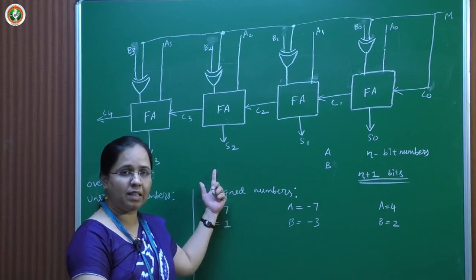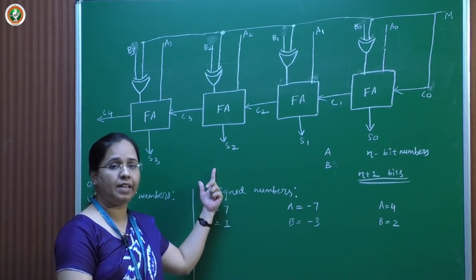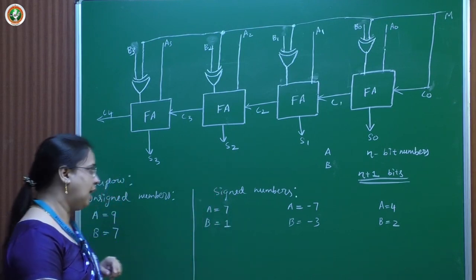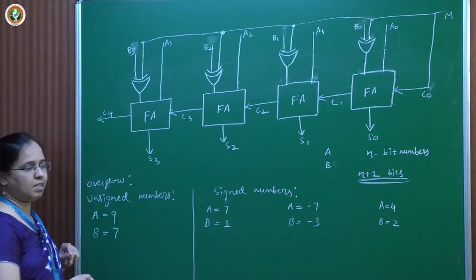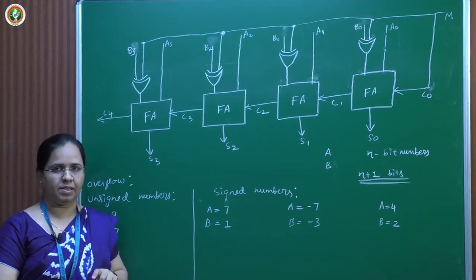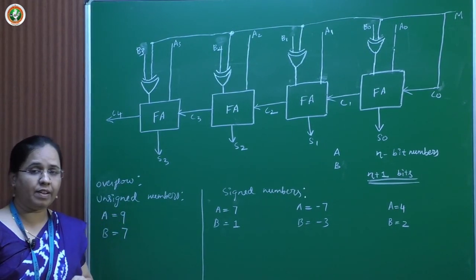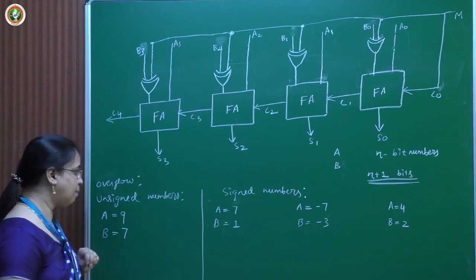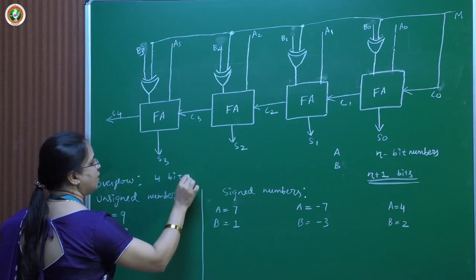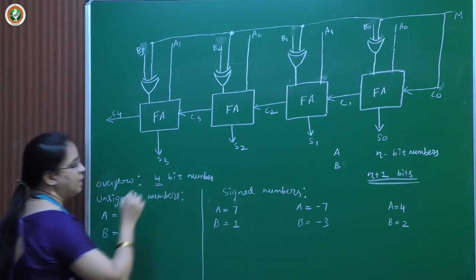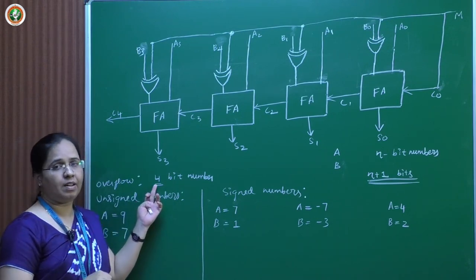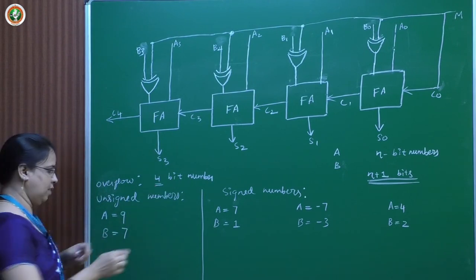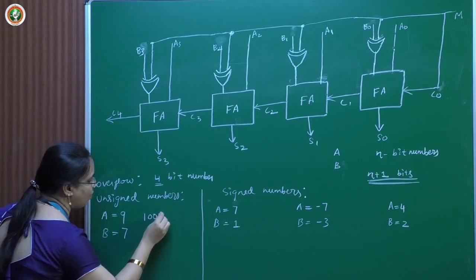Overflow can be detected differently for unsigned numbers versus signed numbers. For unsigned numbers, all bits represent the magnitude. For example, in a 4-bit number, all 4 bits represent the magnitude. The number 9 can be represented as 1001, and 7 as 0111. When adding these two 4-bit numbers, the result should also fit in 4 bits.